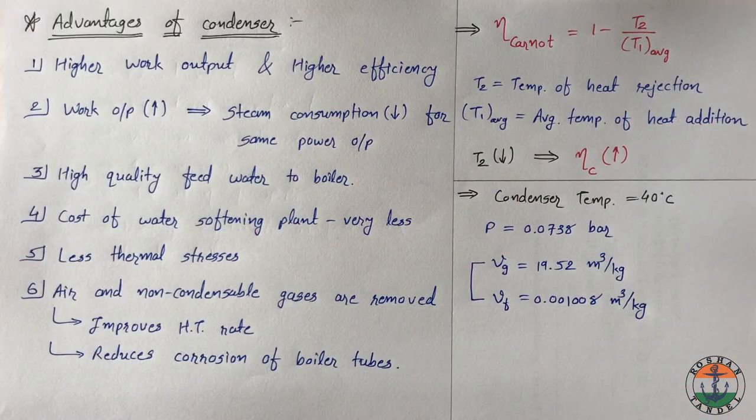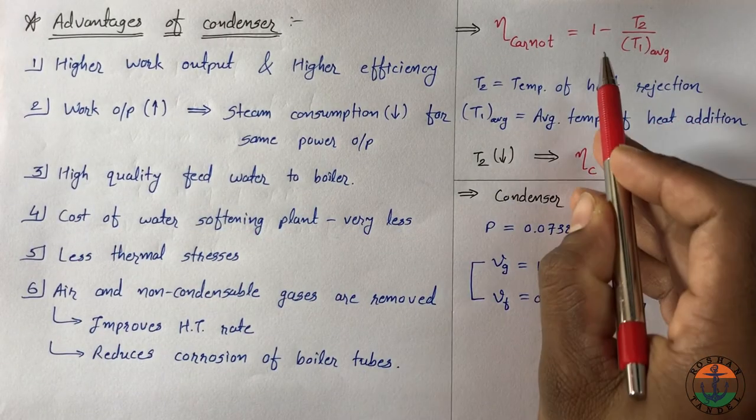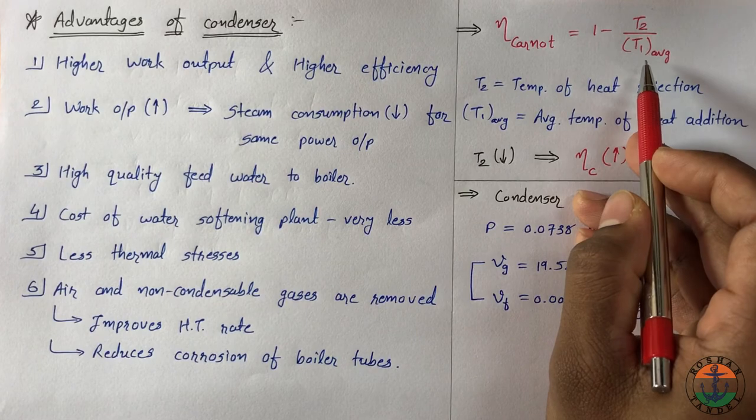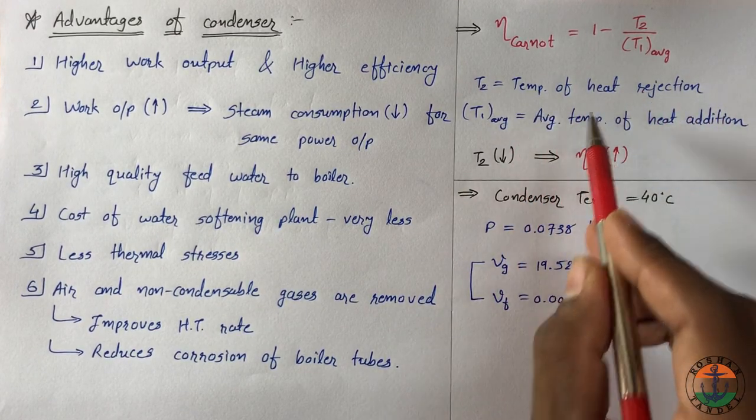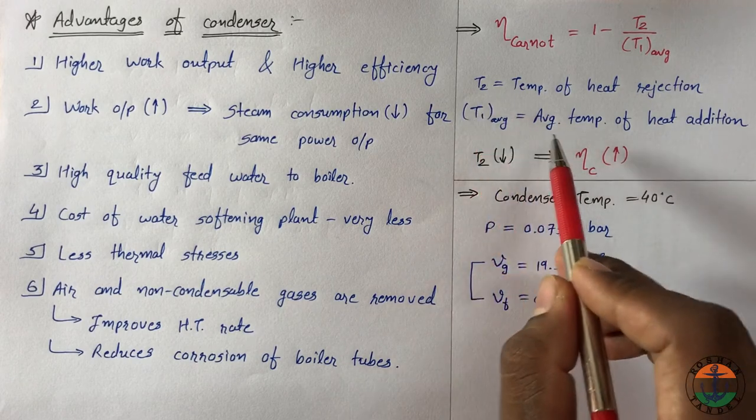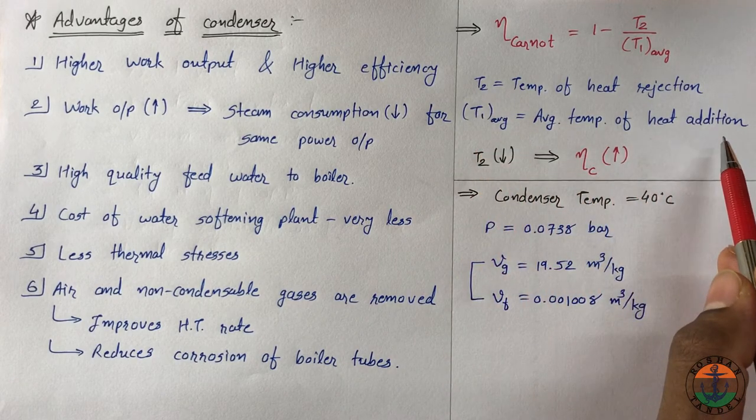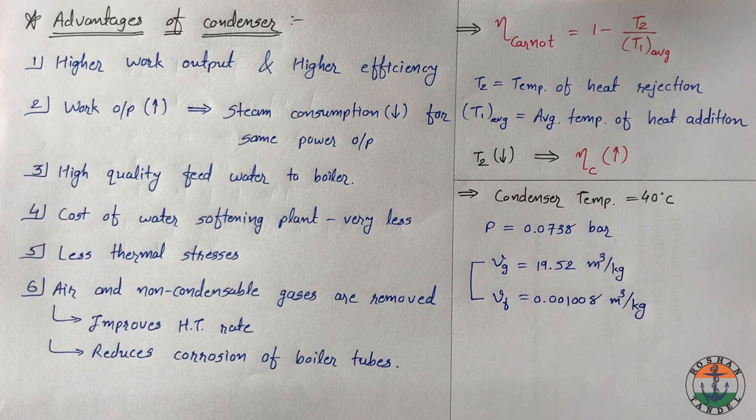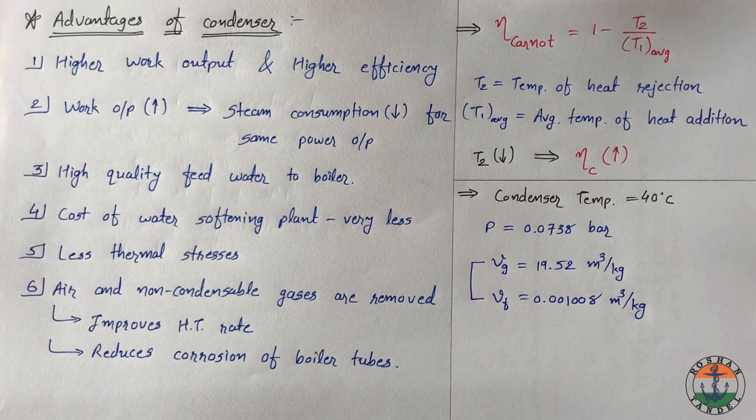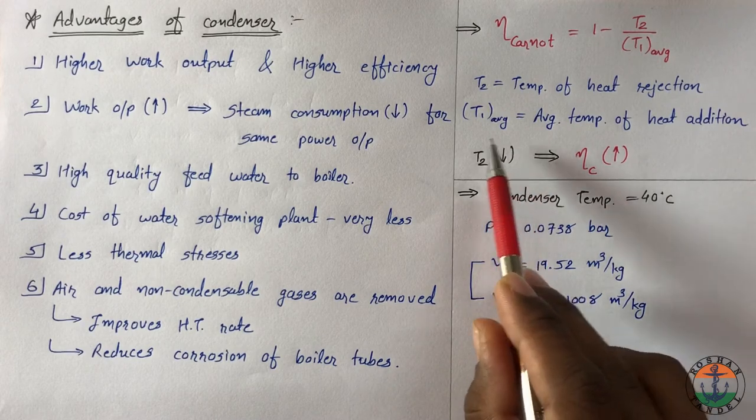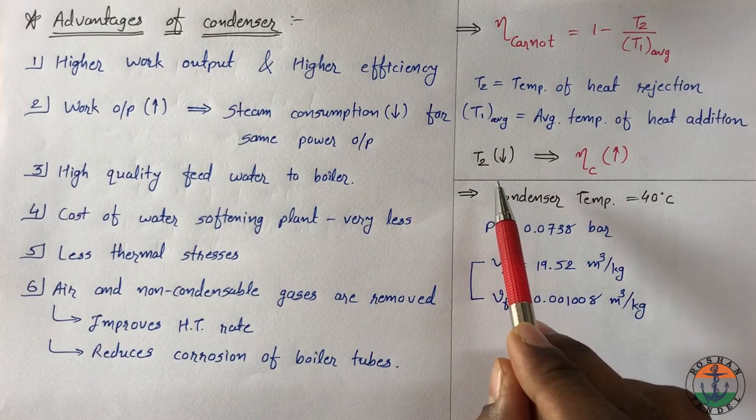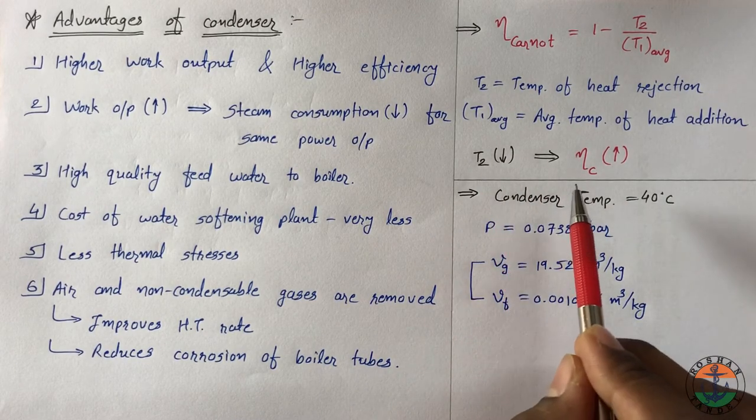Carnot efficiency is calculated by 1 minus T2 by T1 average, where T2 is the temperature of heat rejection and T1 average is the average temperature of heat addition. If you decrease the temperature of heat rejection, T2 also decreases. Hence we will get higher efficiency by decreasing the condenser pressure.